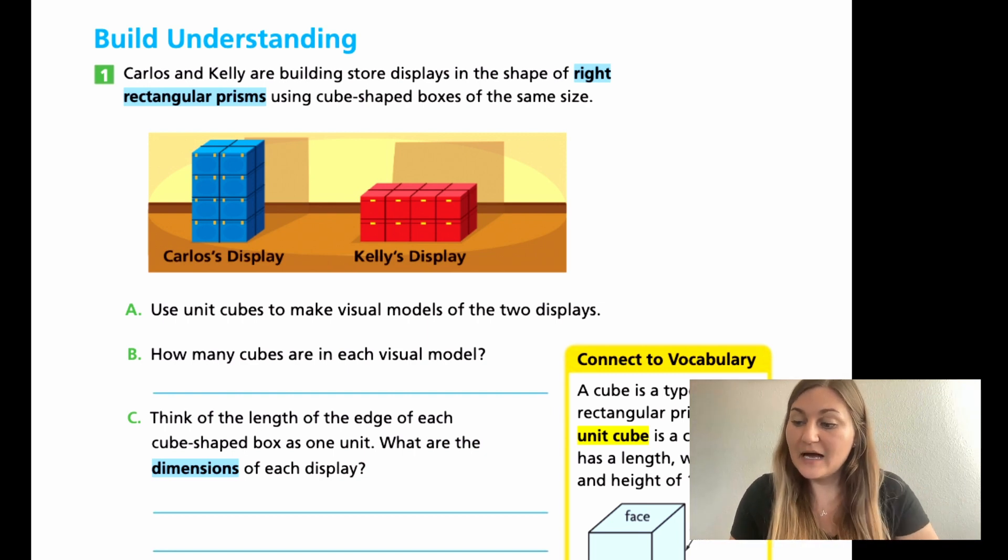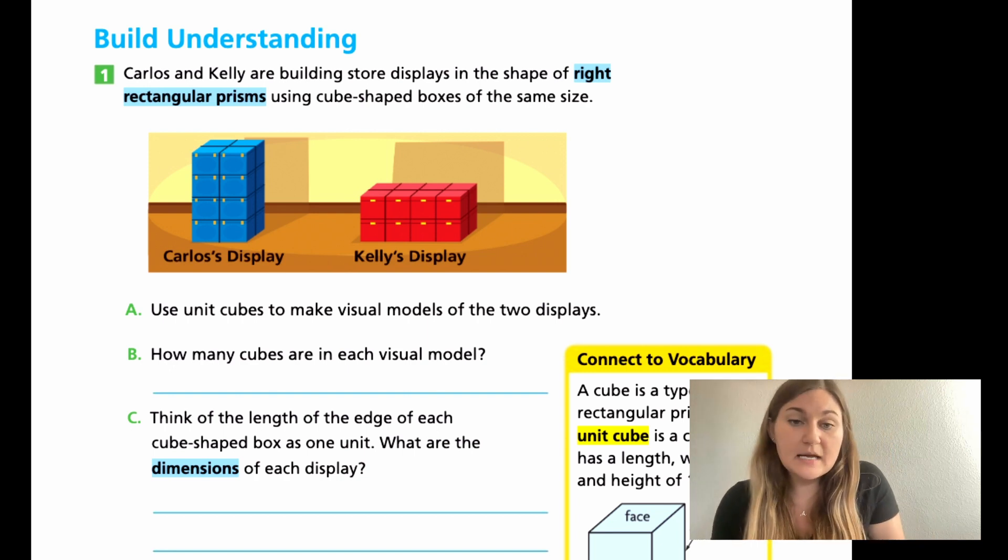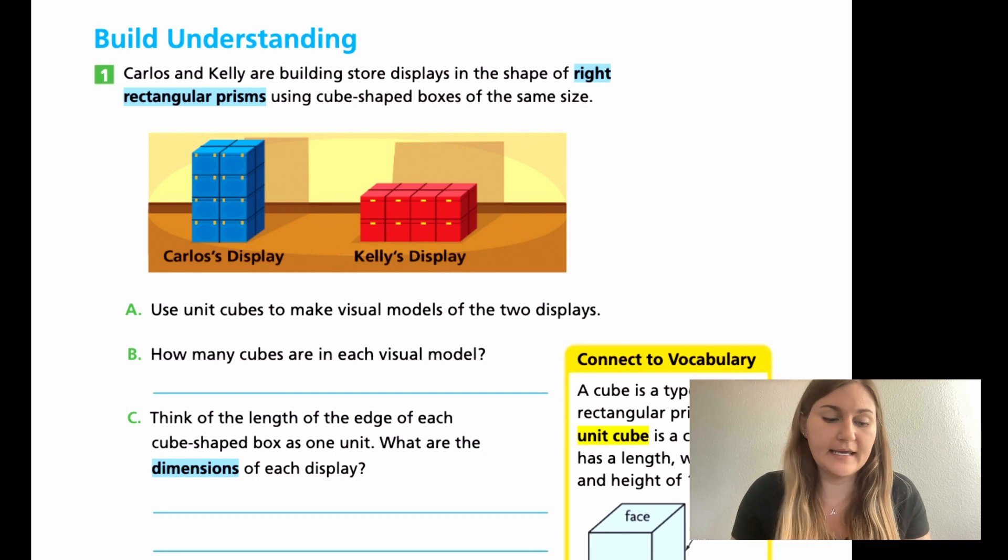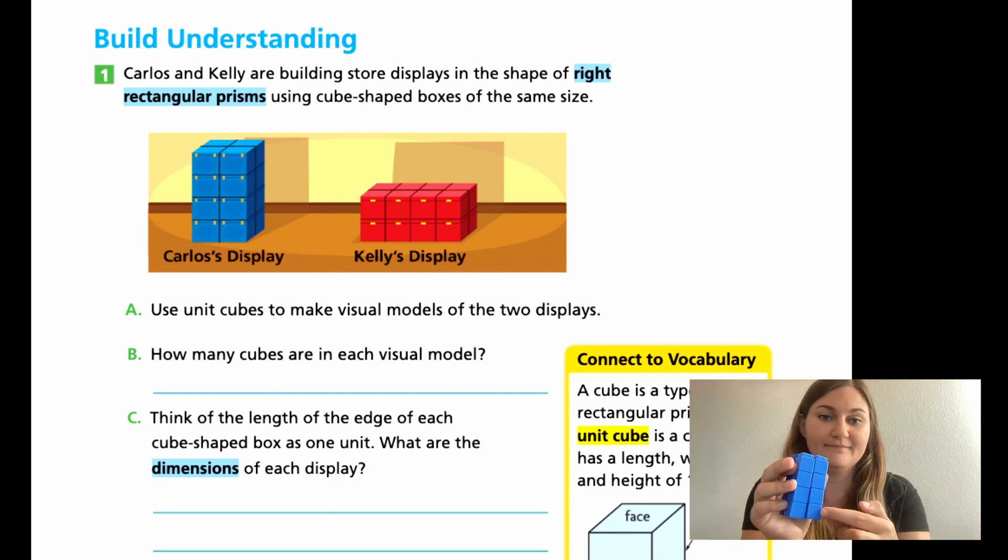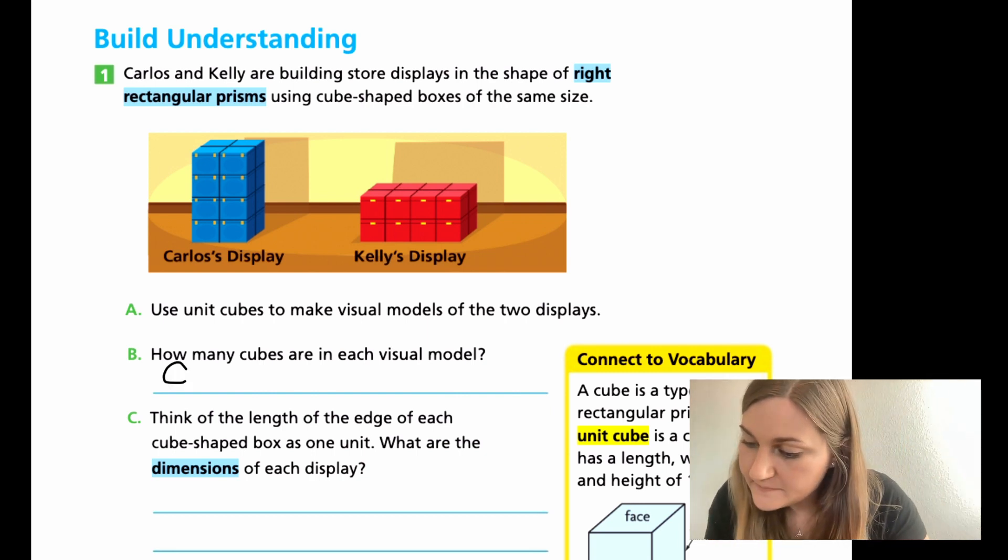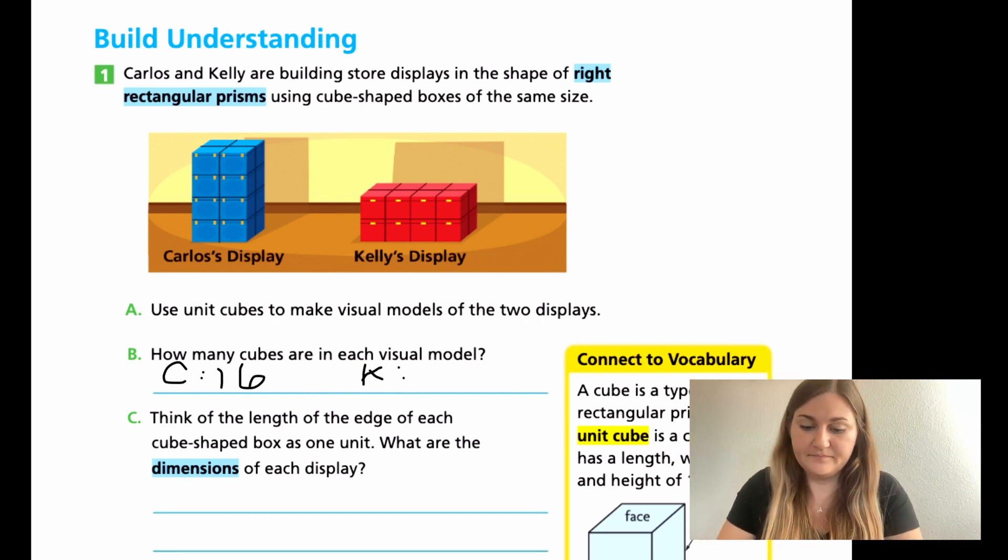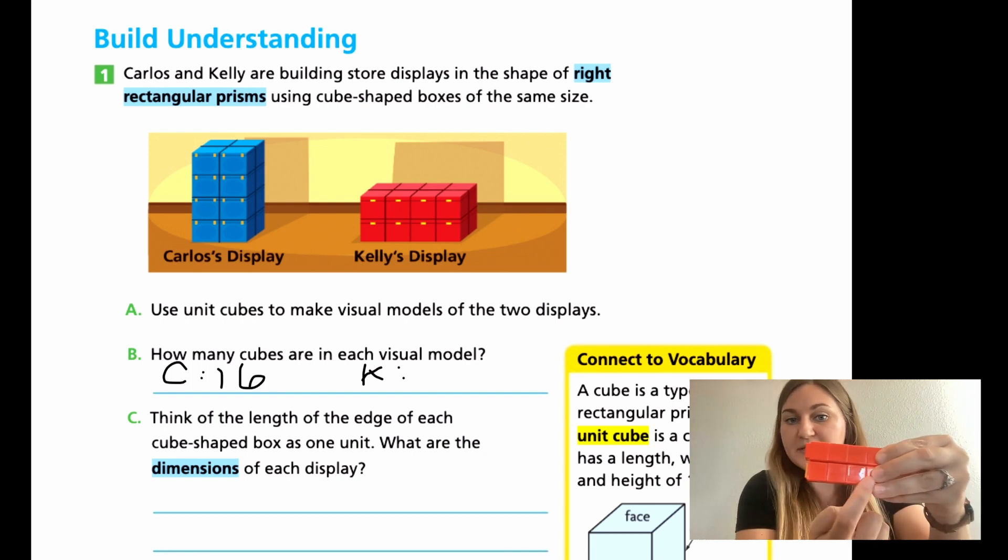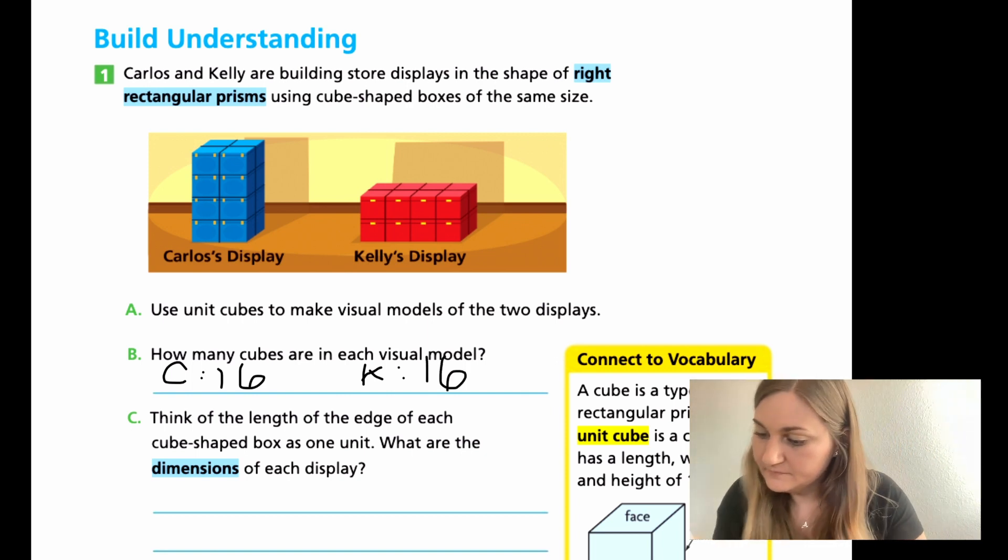So in B, how many cubes are in each visual model? Well, if you wanted to, we could just count. If you want to do your length times width times height, that's great too. For right now, I'm just going to count. So my dark blue, I have one, two, three, four, five, six, seven, eight. Then one, two, three, four, five, six, seven, eight. Eight plus eight is 16. So in Carlos's, I have 16. And Kelly, watch this. One, two, three, four, five, six, seven, eight. One, two, three, four, five, six, seven, eight. Again, 16.